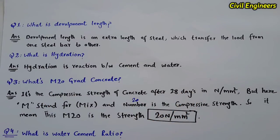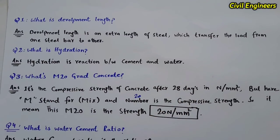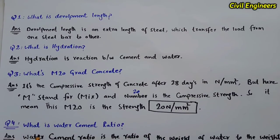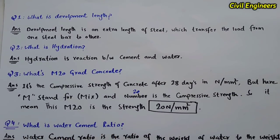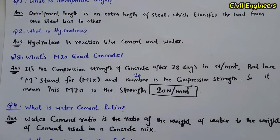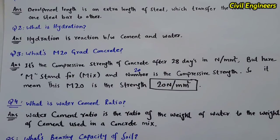Question number four: what is water cement ratio? Water cement ratio is the ratio of the weight of water to the weight of cement used in a concrete mix.